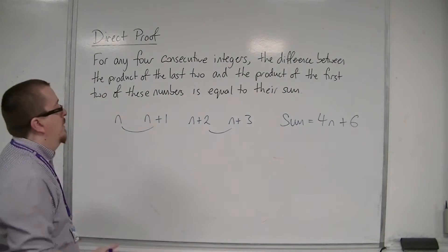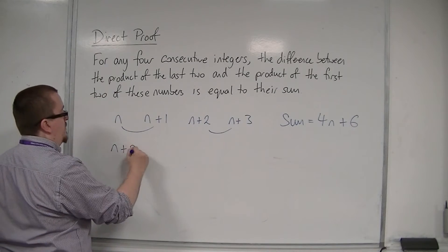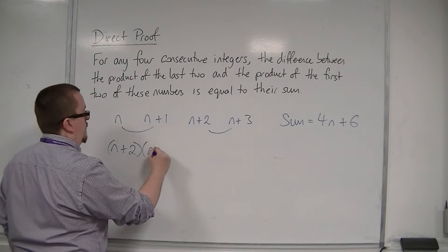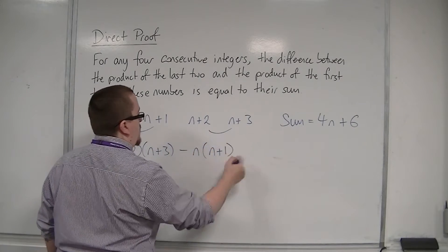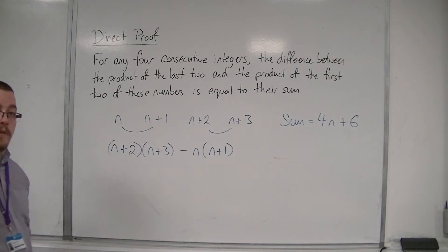We want to show that the product of the last two, take away the product of the first two, is equal to this 4n plus 6.